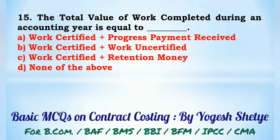Question 15: The total value of work completed during an accounting year is equal to — work certified plus work uncertified. Answer: work certified plus work uncertified.